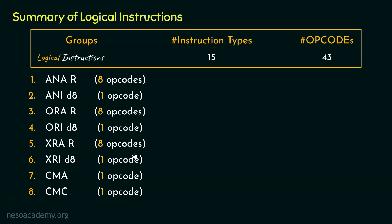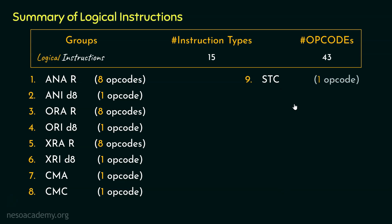Instruction types 1 and 2 — ANAR and ANID8 — pertain to the logical AND operation, while ORAR and ORID8 pertain to logical OR, and XRAR and XRID8 implement logical exclusive OR. After CMC, we also learnt the instruction type STC, which stands for set the carry flag. For STC, there is only a single opcode.